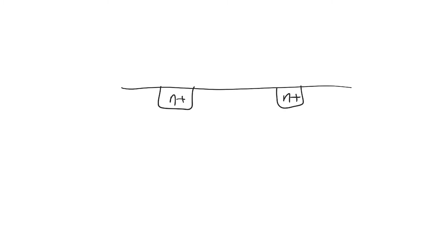If we look at an NMOS transistor — just a very conceptual view — there are many ways in which current other than the drift current in the drain and the source can flow, but there are three main mechanisms I'm going to discuss in a lot of detail: two of which are really important and the third is not really that big of a deal.